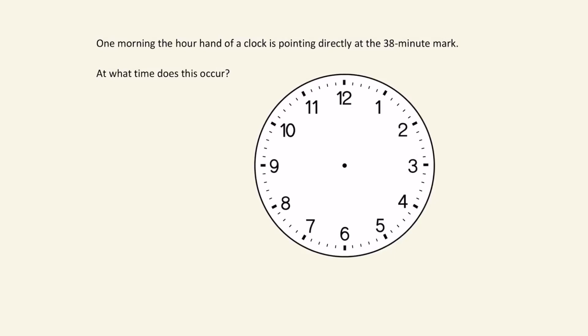One morning, the hour hand of a clock is pointing at the 38-minute mark. What time is this? We can think about this graphically. If we look at where the 38-minute mark is — the 35 would be at the 7 and the 40 would be at the 8 — so the 38-minute mark must be over here.